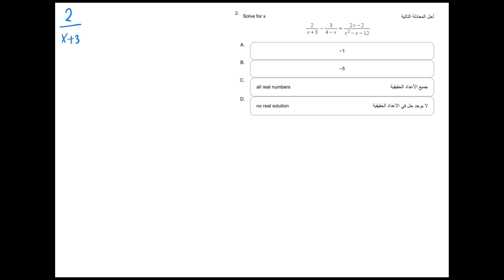So we have 2 over x plus 3 minus 3 over 4 minus x which equals to 2x minus 2 over x squared minus x minus 12. Now this problem could be solved in two different ways. I'm going to walk you through the long way because the shortcut is very straightforward. It requires some understanding of the MSAT tips and tricks how to go about crushing the actual test. So let's go about this.